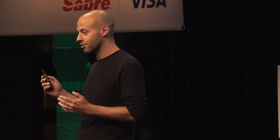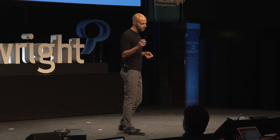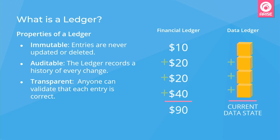How does distributed ledger technology improve all of this and help hotels regain control over their distribution? Let's first quickly make sure that everybody knows what a ledger is. It's an append-only record that keeps track of pieces of information. It's immutable, meaning entries cannot be changed or deleted. It's auditable, as it keeps track of the history of every change as well as the identity of the party making that change. And it's transparent, as anyone who's given access to the ledger can view and validate that each entry is correct.